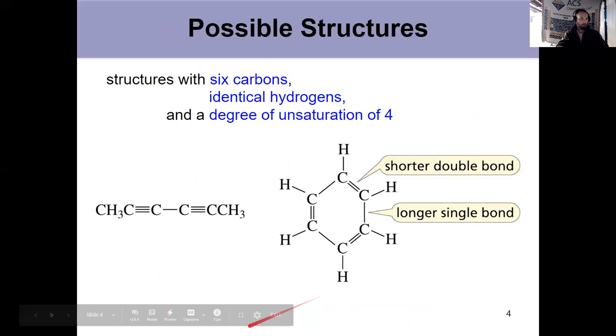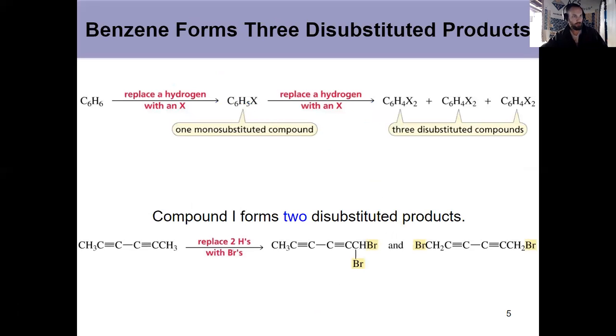Well, I could have a structure like this with two triple bonds, because these six hydrogens are identical. And I have six carbons and six hydrogens. So that meets all of the criteria and has four degrees of unsaturation. And so does this structure here with alternating single and double bonds in a ring, four degrees of unsaturation, C6H6, and all of the hydrogens are identical to one another. So if we knew just the fact that it forms one monosubstituted compound, then we would be good with that.